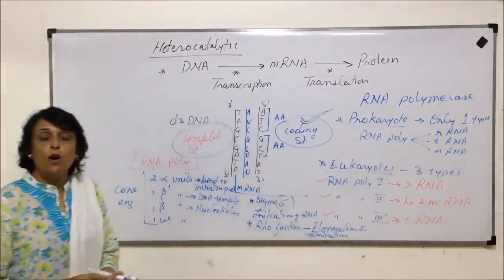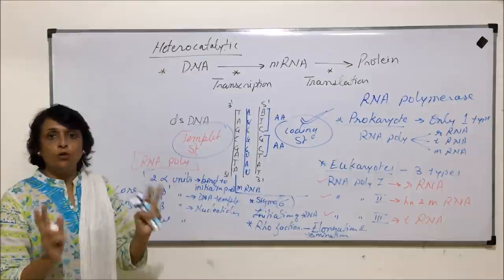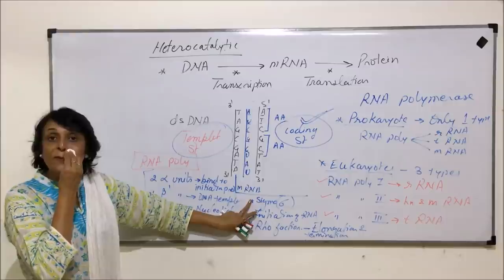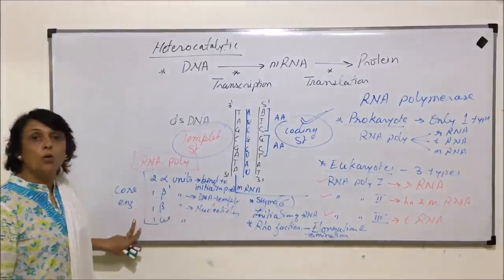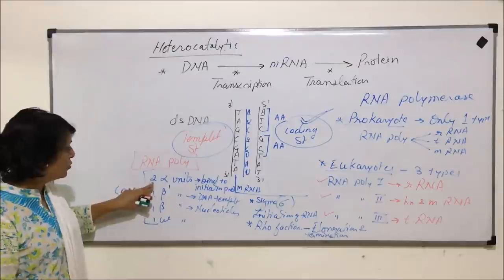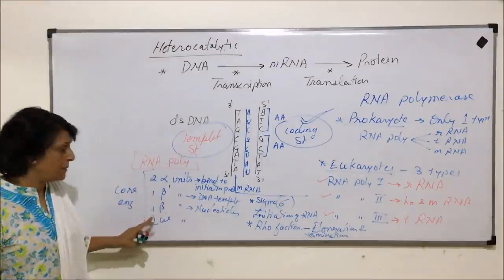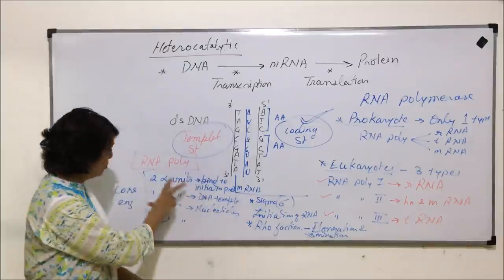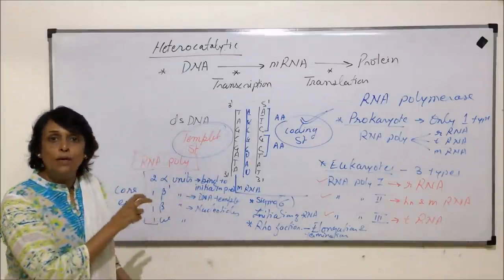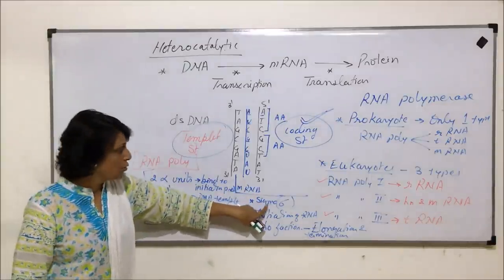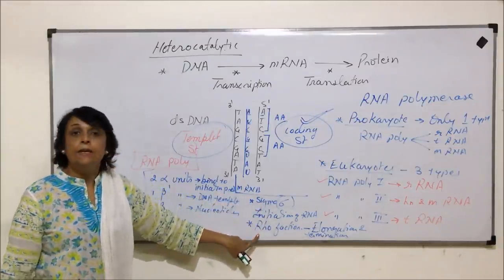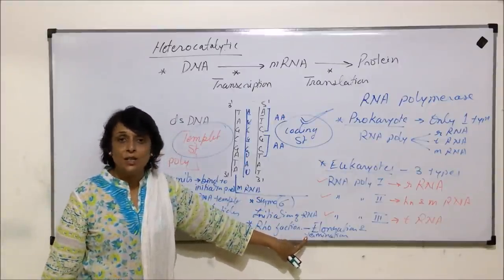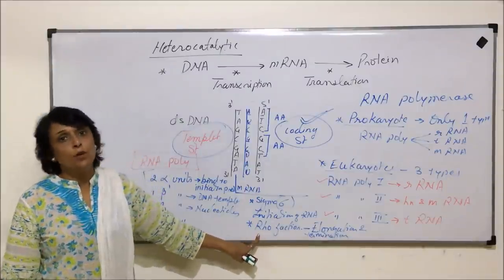So when we talk of RNA polymerase, there are two parts: the core enzyme and the temporarily attached subunits. The core enzyme is made up of five subunits — two alpha, one beta-dash, one beta, and one omega. The sigma factor attaches to the core enzyme only at the time of initiation, and the rho factor attaches during elongation of the mRNA strand and handles termination of the transcription process.